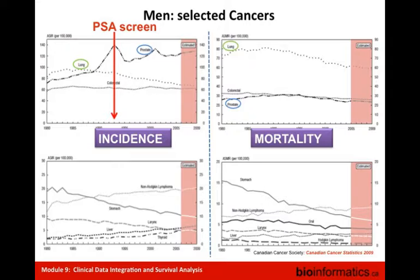Looking at incidence and mortality rates for men by selected cancer type: for prostate cancer, the advent of PSA screening in 1993 led to detection of more early-stage cancers, causing a spike in incidence rate. It was then rapidly realized that PSA is not always associated with malignant disease, and incidence declined in subsequent years. The mortality rate for prostate cancer is declining only a little, because we're still not doing a great job distinguishing aggressive from indolent cancers.